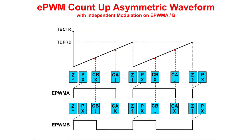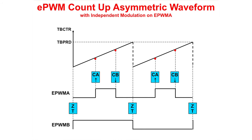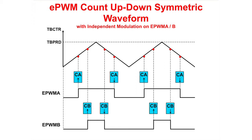The next few figures show how the action qualifier uses the compare matches to modulate the output pins. Notice that the output pins for EPWM-A and EPWM-B are completely independent. On the EPWM-A output, the waveform will be set high on zero match and clear low on compare A match. On the EPWM-B output, the waveform will be set high on zero match and clear low on compare B match. This figure has the EPWM-A output set high on compare A match and clear low on compare B match, while the EPWM-B output is configured to toggle on zero match. Here you can see different output actions on the up count and down count using a single compare register, setting high on compare A and B up count matches and clearing low on compare A and B down count matches.